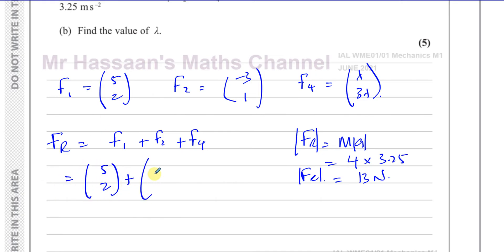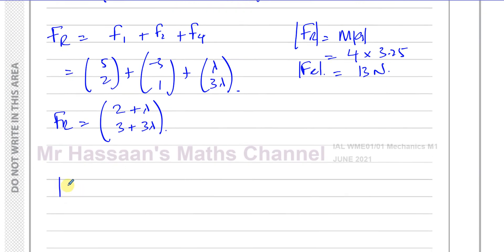So if I can find what the resultant force is in terms of lambda, I can then equate the magnitude to 13. So the resultant force is (5, 2) plus (-3, 1) plus (lambda, 3 lambda), which equals (2 + lambda, 3 + 3 lambda). So the magnitude is (2 + lambda) squared plus (3 + 3 lambda) squared equals 13 squared.